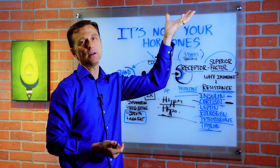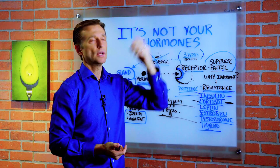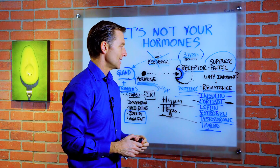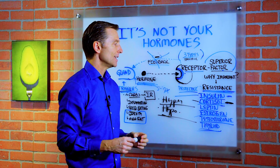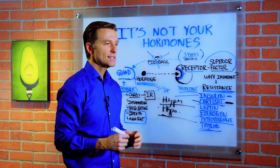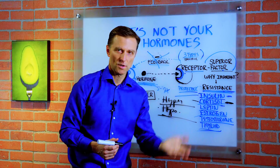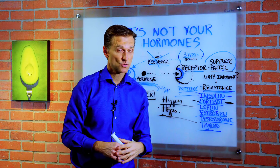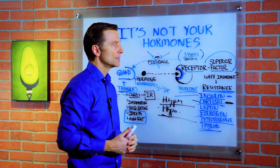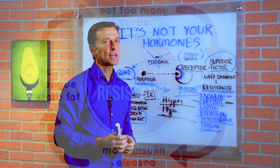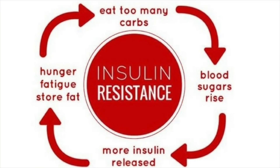Cushing syndrome involves high amounts of cortisol yet all the symptoms of low cortisol — extremely confusing. But if you understand the receptor concept, you can understand it very simply.